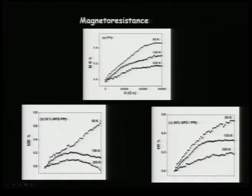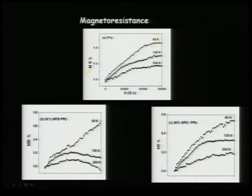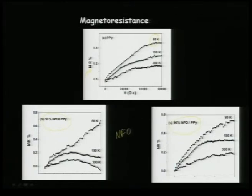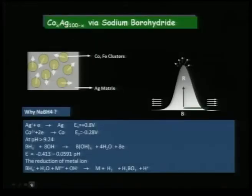For the optimum composition of 50 percent NFO in the NFO-PPY composite, MR is much higher than even 90 percent loading. There seems to be some influence of the NFO loading on polypyrrole, and there is some way to find magnetoresistance even in bulk composites, although the magnitude is less.